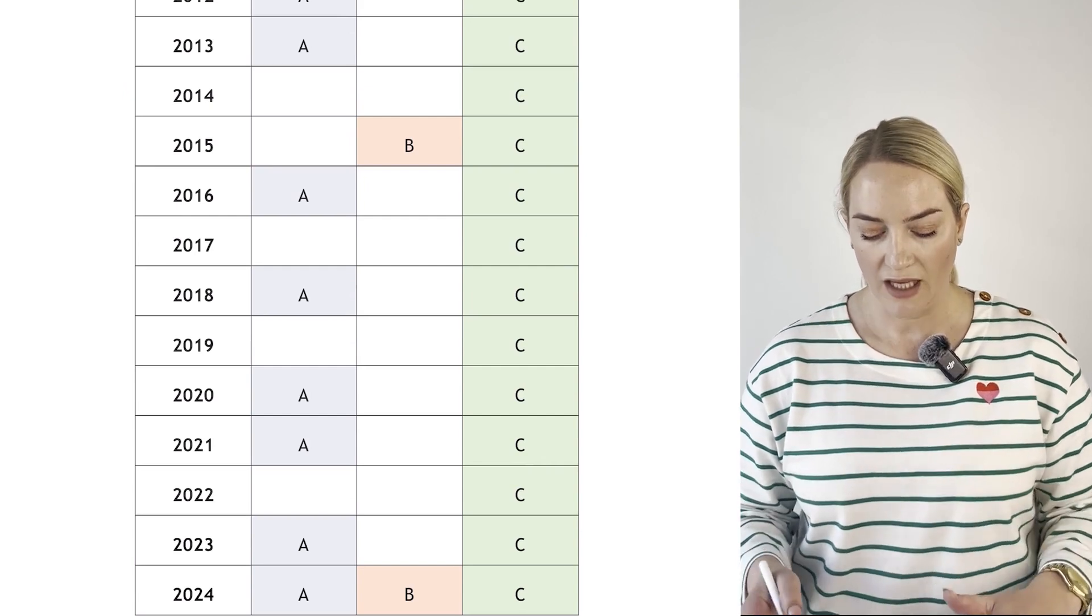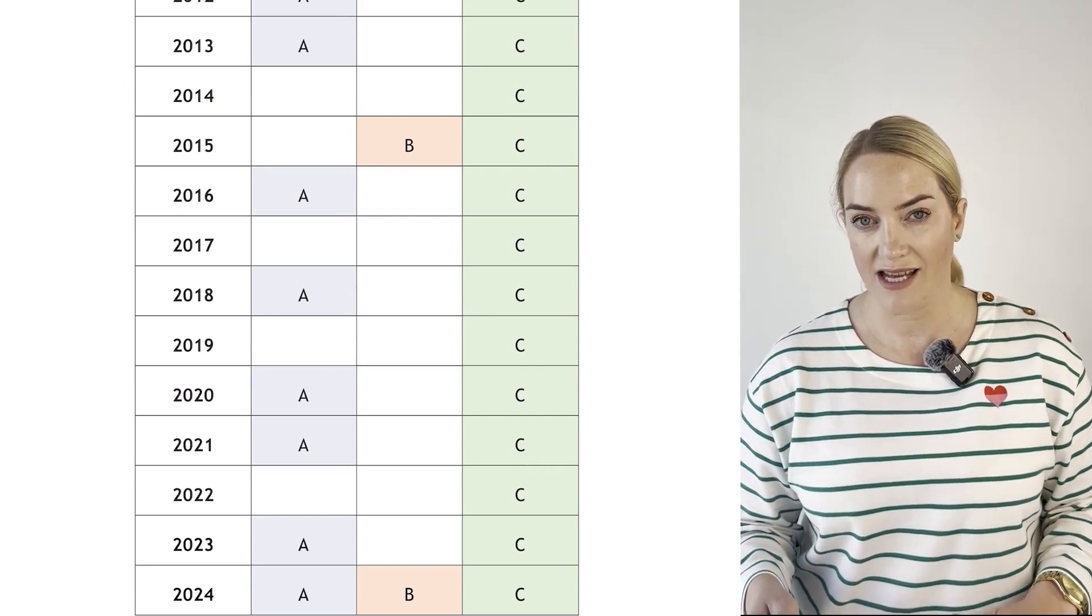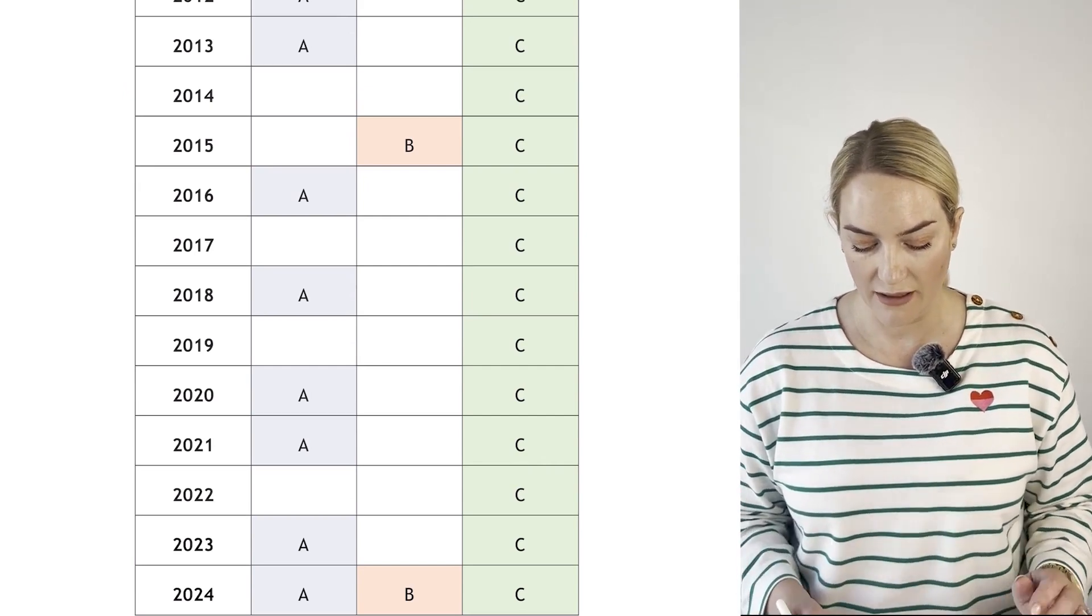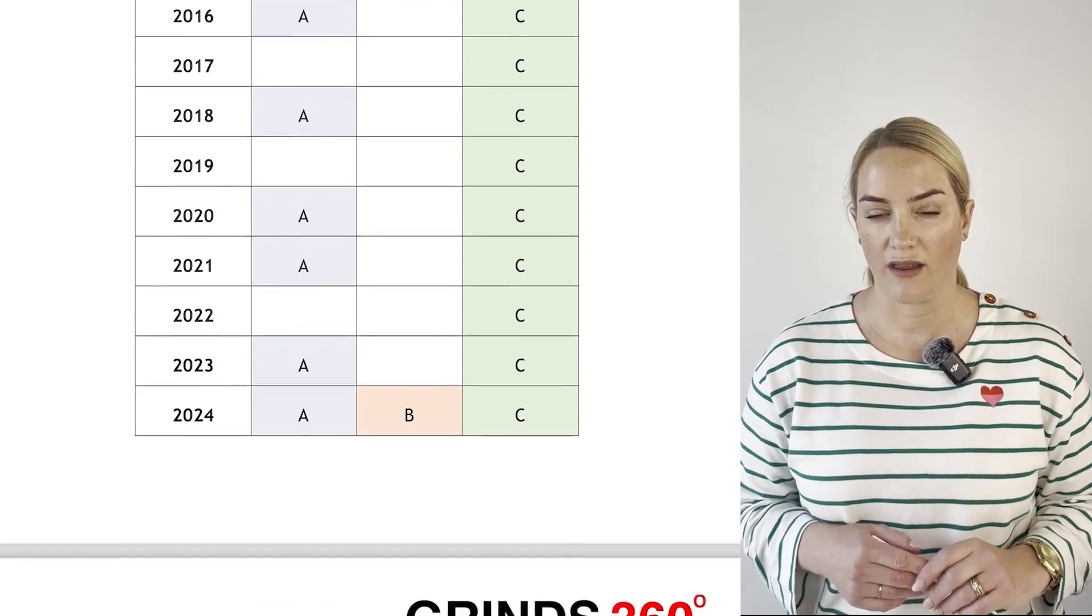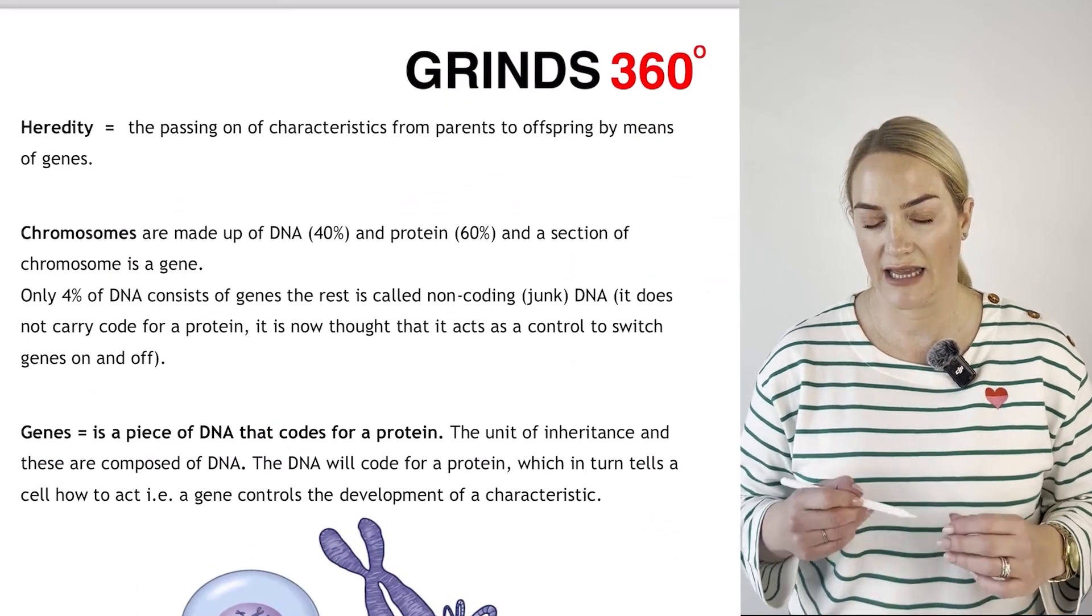It usually comes up in section A as well. In 2024, it came up in A, B, and C, so overall genetics was worth 27.5% this year.